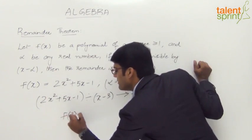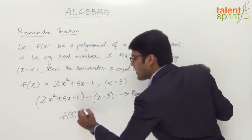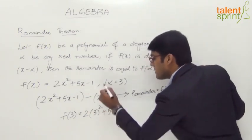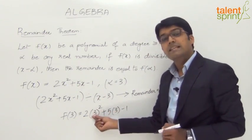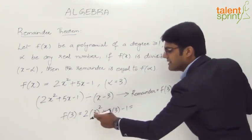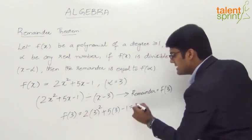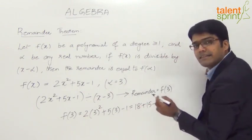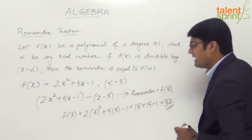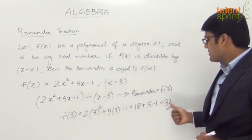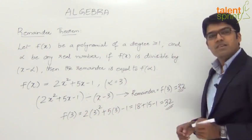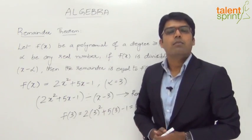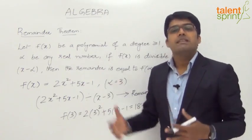So what is f of 3? f of 3 will be equal to 2 into 3 squared plus 5 into 3 minus 1. Simplifying: 3 squared is 9, 9 into 2 is 18, plus 15, minus 1. 18 and 15 is 33, minus 1 equals 32. So f of 3 is equal to 32, and the remainder of this division is going to be 32. This is how we can find the remainder when dividing a polynomial without doing the actual division.